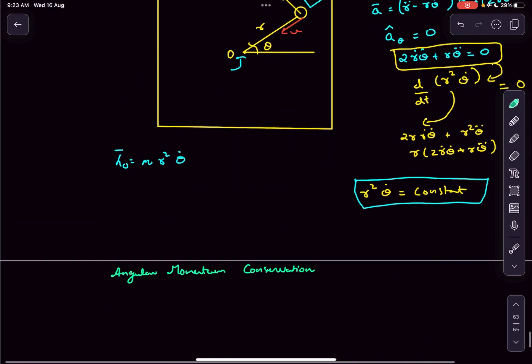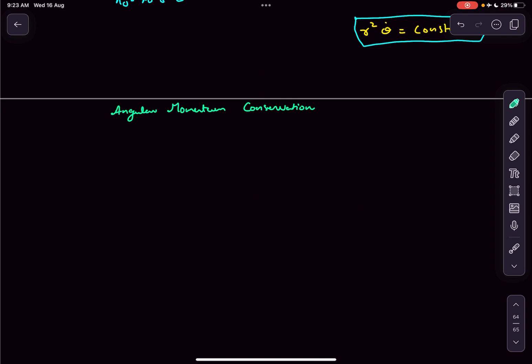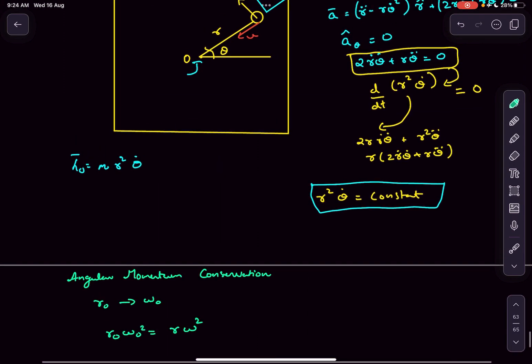A boundary condition is given: when the radius was r naught, angular velocity was omega naught. So r naught omega naught square equals at any general time t when radius is r, r omega square. Now we have to talk about tension.